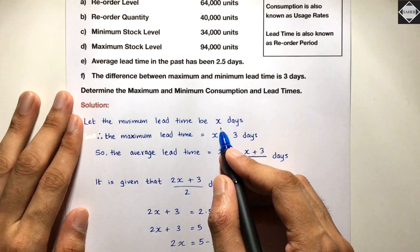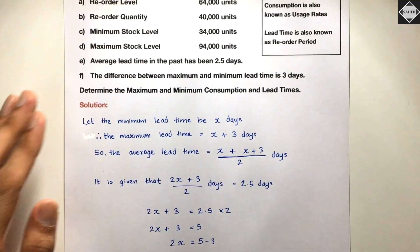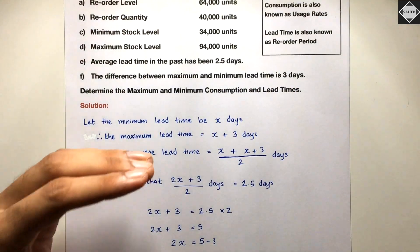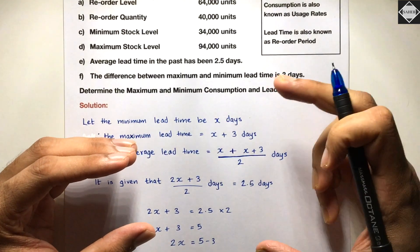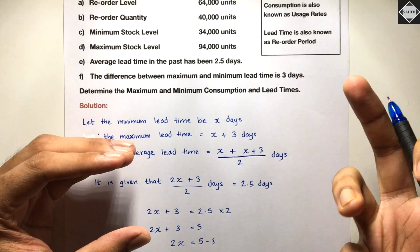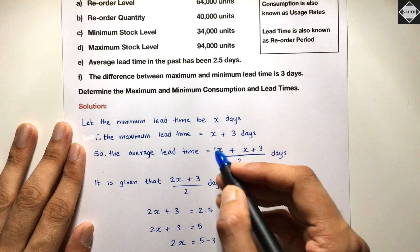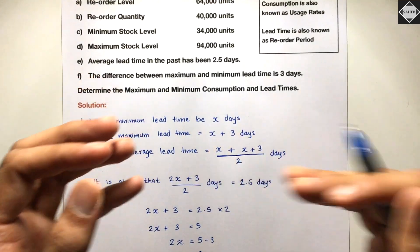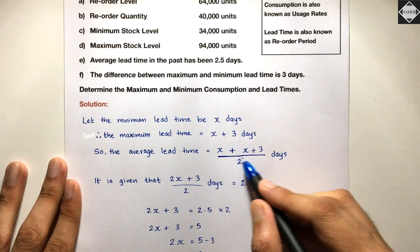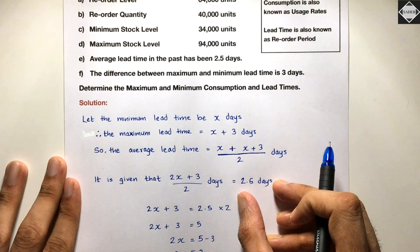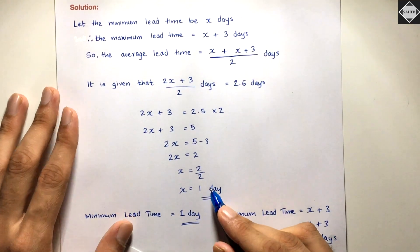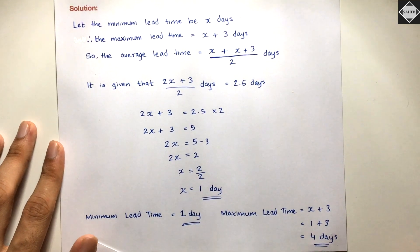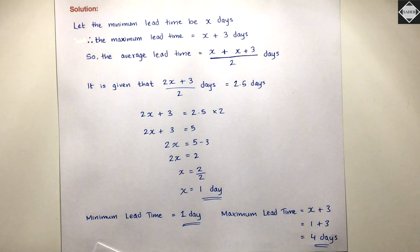Why did we assume minimum lead time as x and not maximum? Because the question states the difference between the two is 3 days, and the extra 3 days always belongs to the maximum. So minimum = x and maximum = x + 3. Using the average lead time formula with these expressions, we solved for x and found minimum lead time = 1 day and maximum lead time = 4 days.